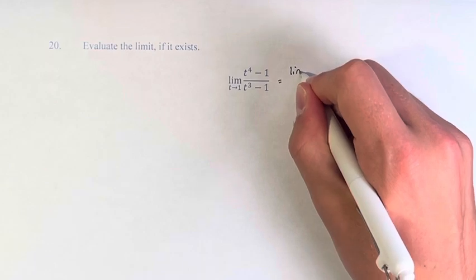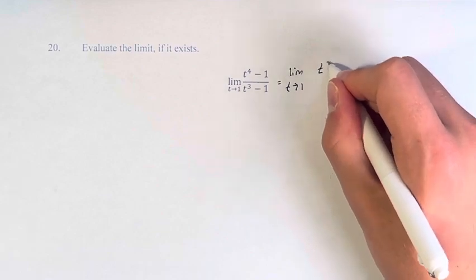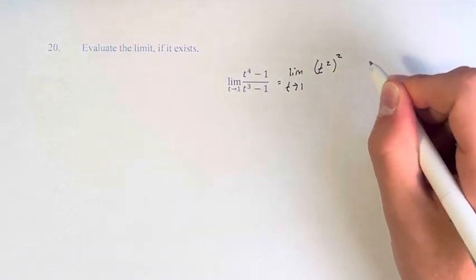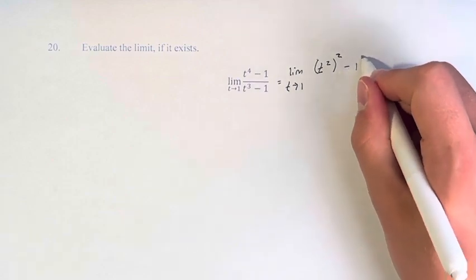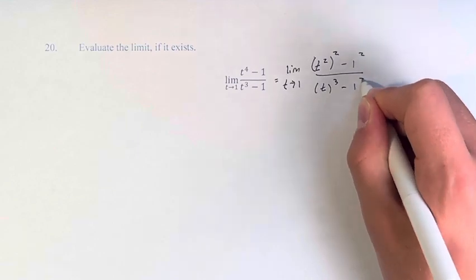So this is equal to t to the fourth is t squared squared, and 1 is 1 squared, t cubed and 1 cubed.